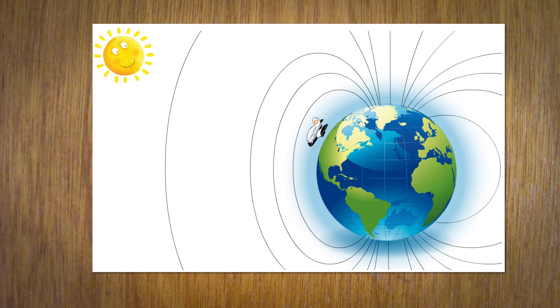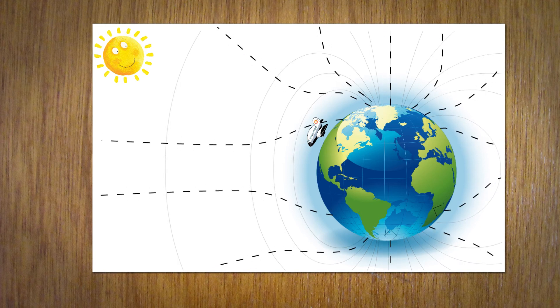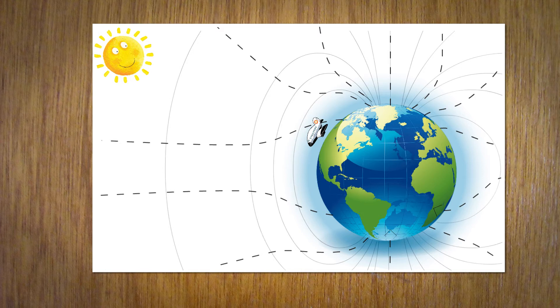Our planet has a magnetic field, and also directs the radiation towards the poles. At the Earth's poles, therefore, the radiation is stronger than at the equator, which is partly why we have auroras.